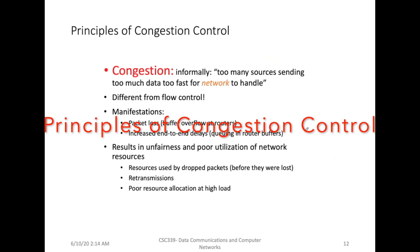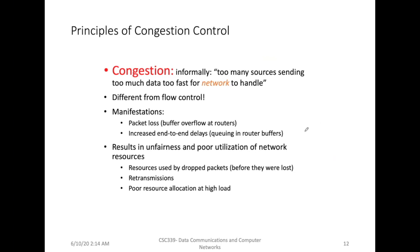Let's understand what we mean by congestion. Informally, too many sources are sending too much data too fast for the network to handle. The flows are from different machines, and the manifestation of network congestion is packet losses due to buffer overflow at the router or destination, and increased end-to-end delay because the RTT has increased. These two things indicate congestion in the network, resulting in unfair and poor utilization of network resources.